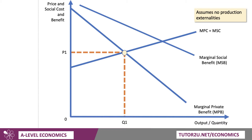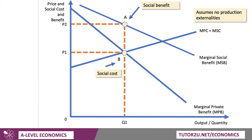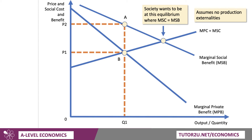At Q1 — the equilibrium for the market where you only think about your own private costs and benefits — there's an external benefit shown by the distance A to B. What that means is that at Q1, at price P2, the social benefit is at A and the private social cost is at B. So at Q1, social benefit is greater than social cost, and therefore if we underconsume anything beyond Q1, the benefit is still bigger than the cost from a social point of view up to the next intercept. So society probably wants to be closer towards the point where we bring social cost and benefit into balance at a higher output level Q2.